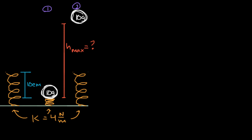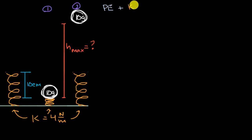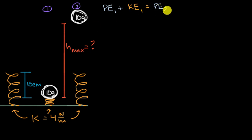Now let's work through this together. The total energy is conserved, but what is it made up of? It's going to have some potential energy and some kinetic energy. So our potential energy in scenario one plus our kinetic energy in scenario one must equal our potential energy in scenario two plus our kinetic energy in scenario two.